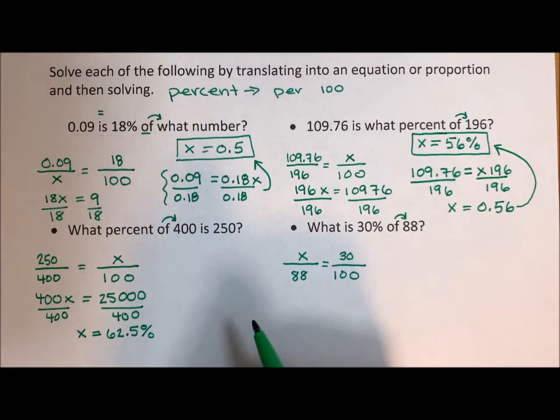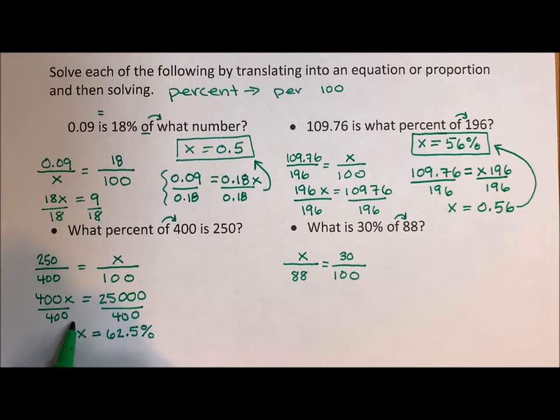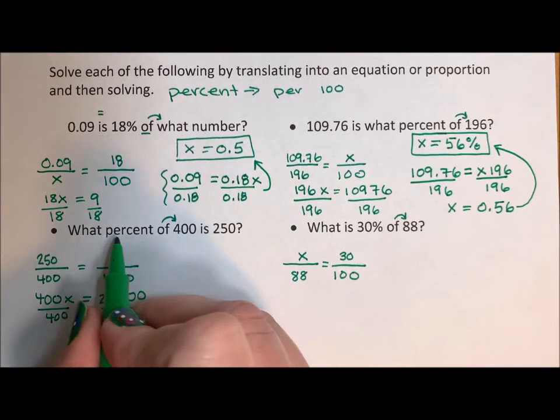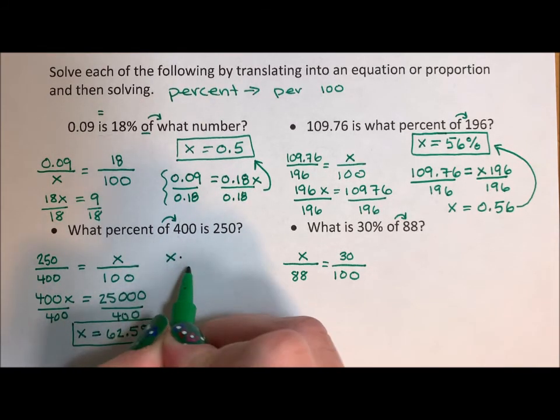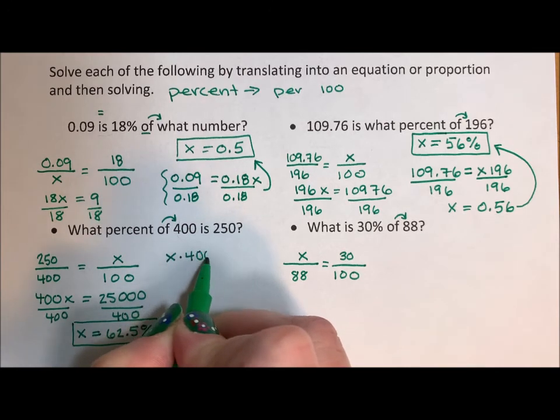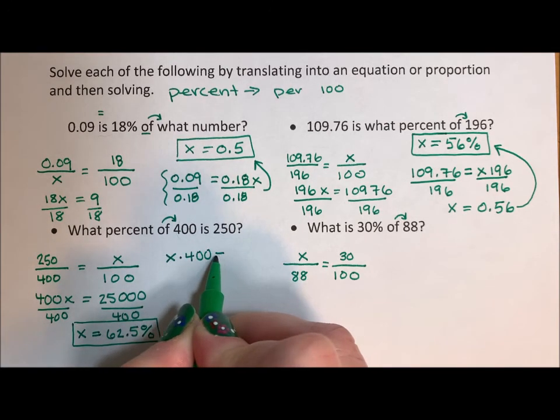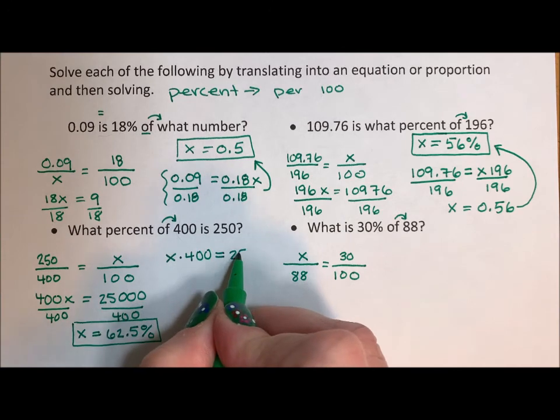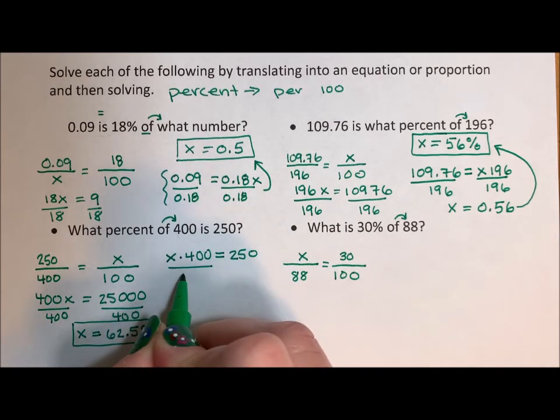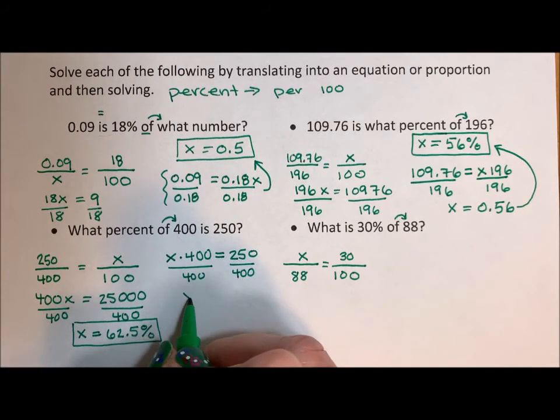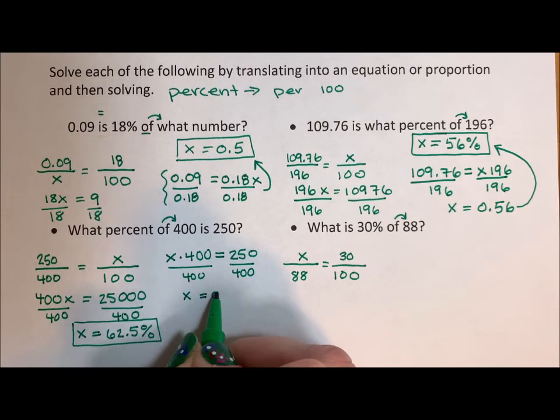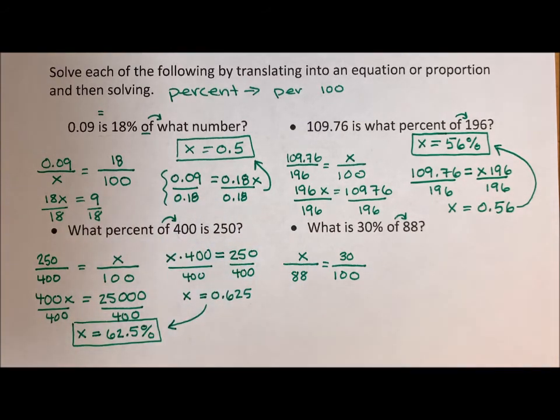If we translate this into a sentence, what percent of is multiplication, 400 is our equal sign, 250. We divide both sides by 400. And we get that X is equal to 0.625. Again, we need to multiply by 100 to turn our decimal into a percent.